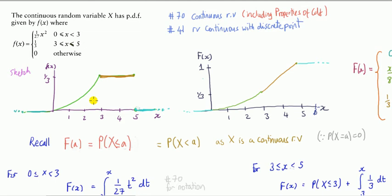How about if I want to find the probability that x is less than 4 — not less than or equal to, but strictly less than 4? Nothing changes, because when x is continuous, talking about x less than or equal to 4 is the same as x less than 4. That's the reason it's stated this way, and it also explains why we can set these inequalities to strict or non-strict.